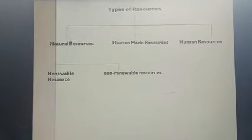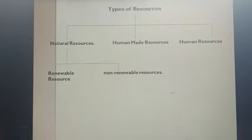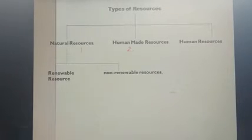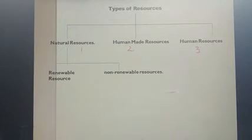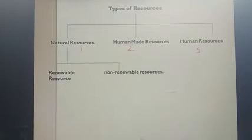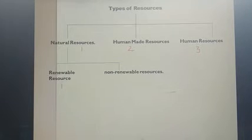Next, the types of resources. There are three types of resources: first, natural resource; second, human-made resource; third, human resource. This natural resource is further classified into two types: renewable resource and non-renewable resource.